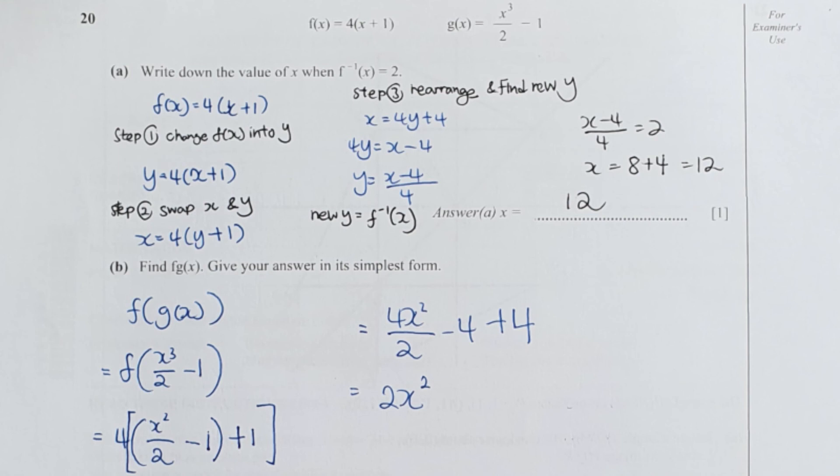The first step is to identify what's the F inverse first. I have a three-step method here. First is to change the Fx into Y. Second step, swap them. Third step is to identify the new Y. So the new Y here will actually be the inverse. So x minus 4 over 4 equals 2. Run the calculation, you'll get x equals 12.